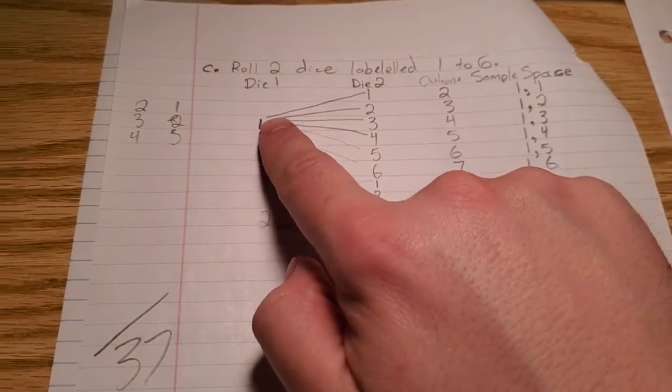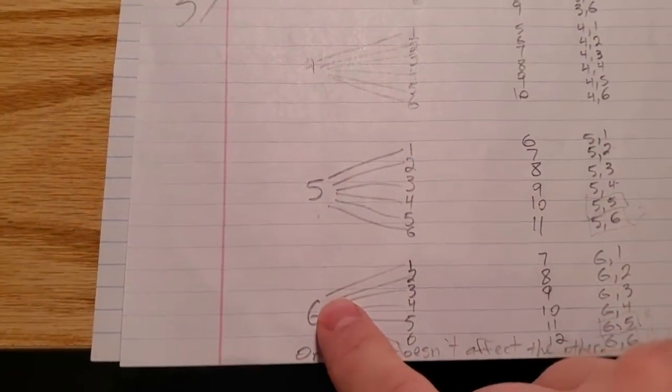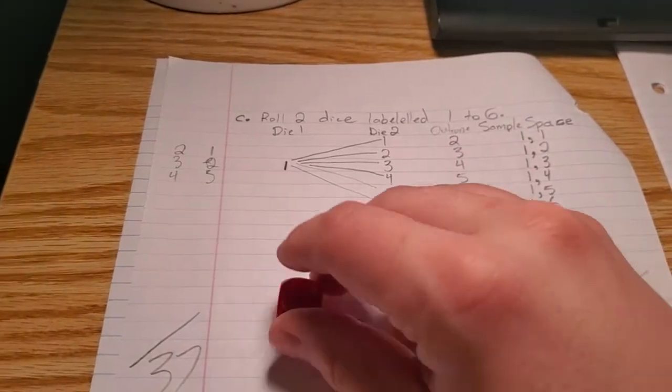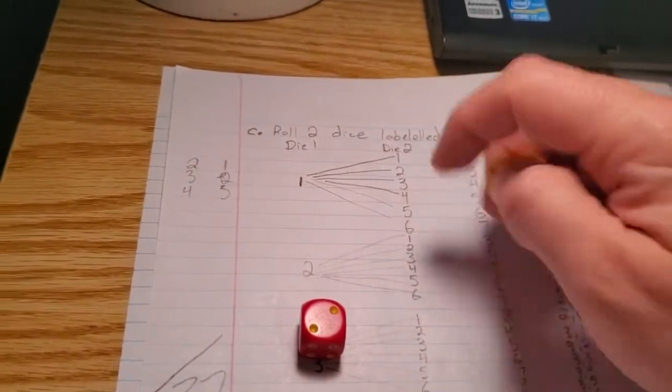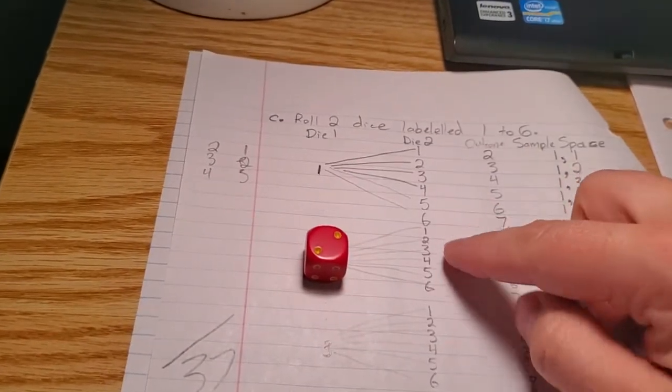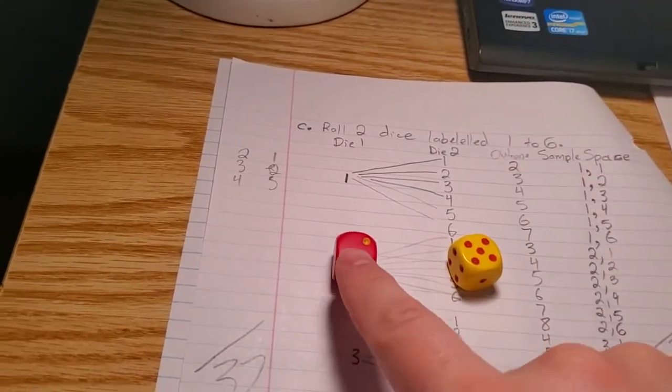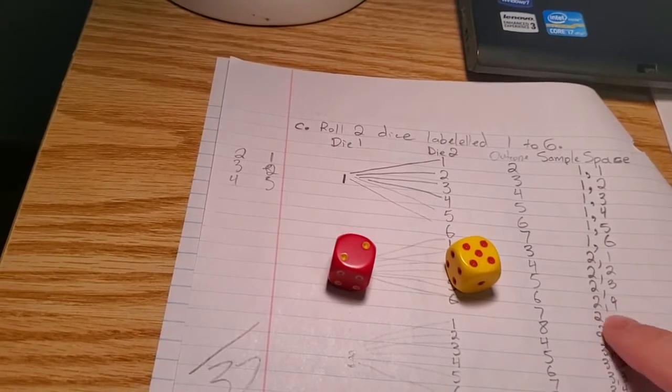So here, remember, you took the six numbers that are on the first die that gets rolled, so pretend it's the red one, and then you took the six possible numbers that the yellow one could be rolled after. So if it's a two first, it could be one, two, three, four, five, six.